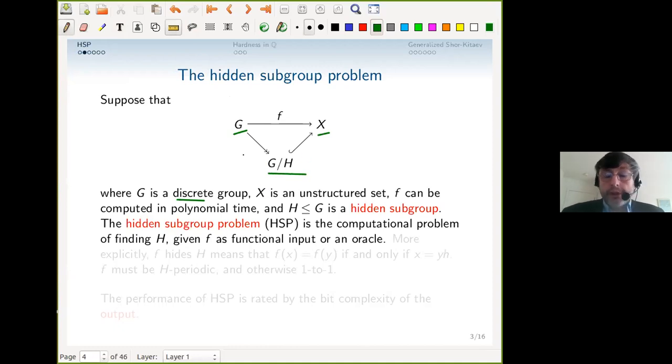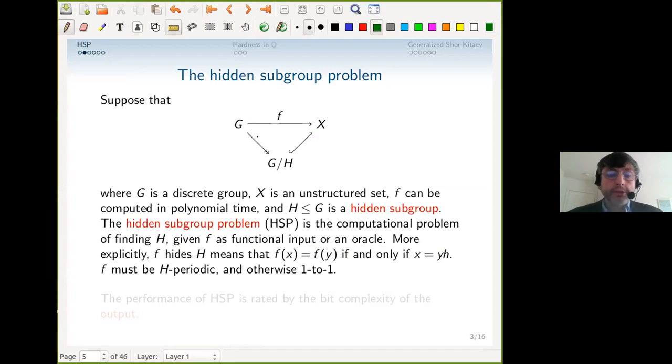In the hidden subgroup problem, we're given f as functional input or by oracle access, and the computational problem is to find what H is. More explicitly, f is H-periodic: f(x) equals f(y) if and only if x equals yh. It's important that f be at least approximately one-to-one, and the performance is rated by the bit complexity of the output.